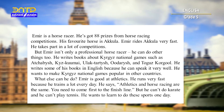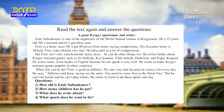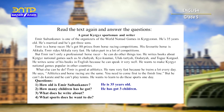Have you understood the text? Great! Now look at the text again and answer my questions: How old is Emir Sultan Kanov? How many children has he got? What does he write about? What sports does he want to do? Let's check: He is 35 years old. He has got three children. He writes about Kyrgyz national games. He wants to do karate and play tennis.